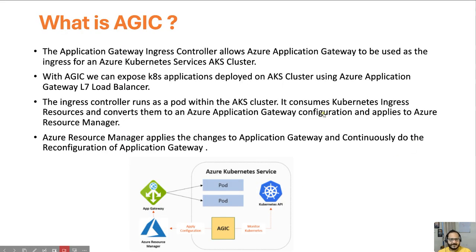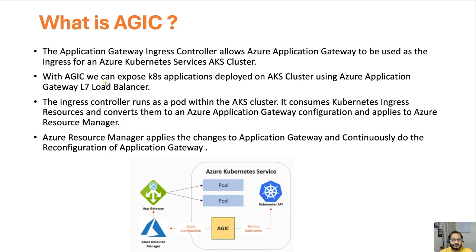So what is AGIC? As we already discussed, it helps us to integrate AKS with Application Gateway. With Azure Application Gateway Ingress Controller we can expose our Kubernetes applications deployed on AKS cluster using Azure Application Gateway L7 load balancing.